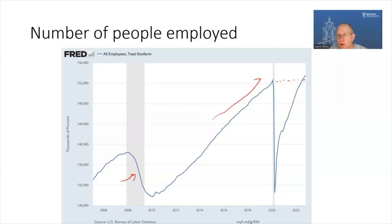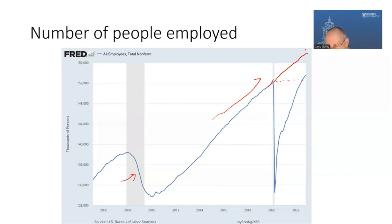This would look like the labor market has healed. But if you just extrapolated a very simple trend from pre-pandemic, we'd still be short around 3 million jobs, plus or minus. This is just a rough extrapolation of the trend, but the point is there are a number of labor market dynamics that have shifted, and we're going to talk about these in this video and the subsequent video.